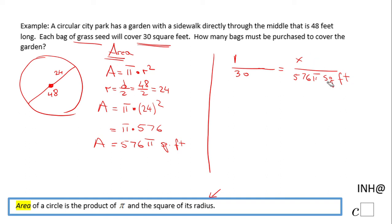You'll notice we have an equation in X where we can multiply, and we have 1 times 576π equals 30 times X. In order to find X, we have to divide by 30, and we have X equals 576π over 30. So we're going to have to use a calculator here.